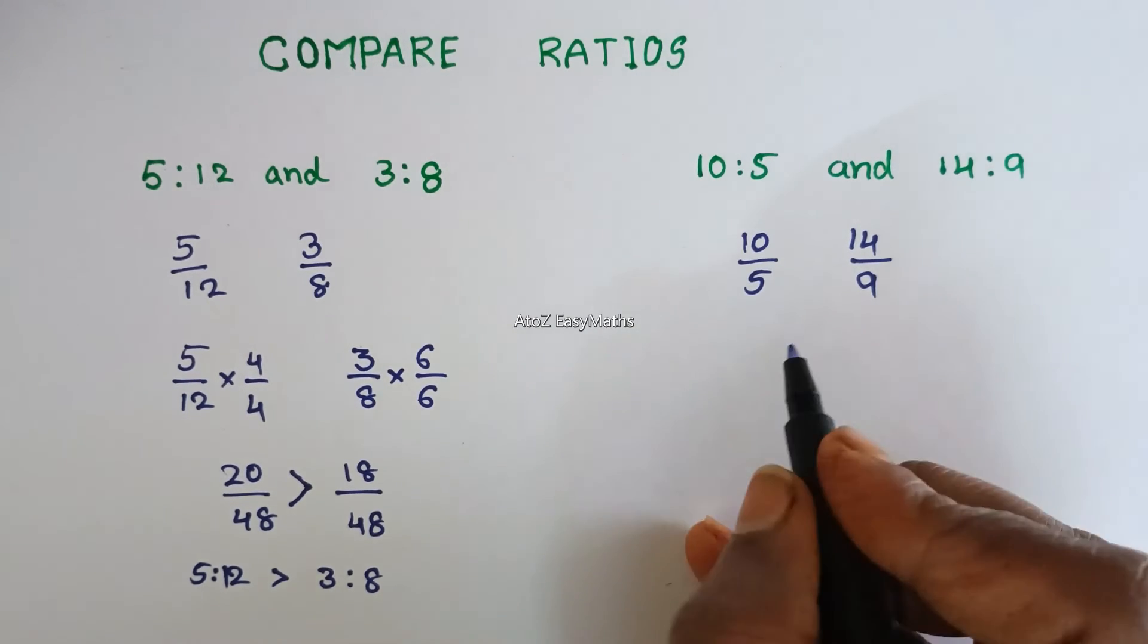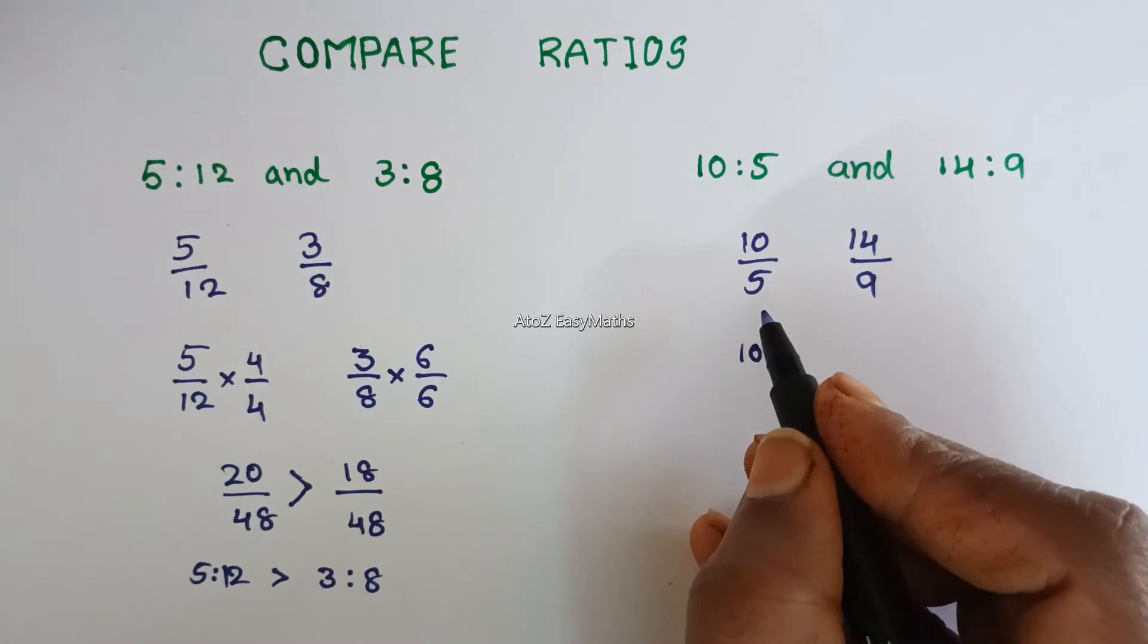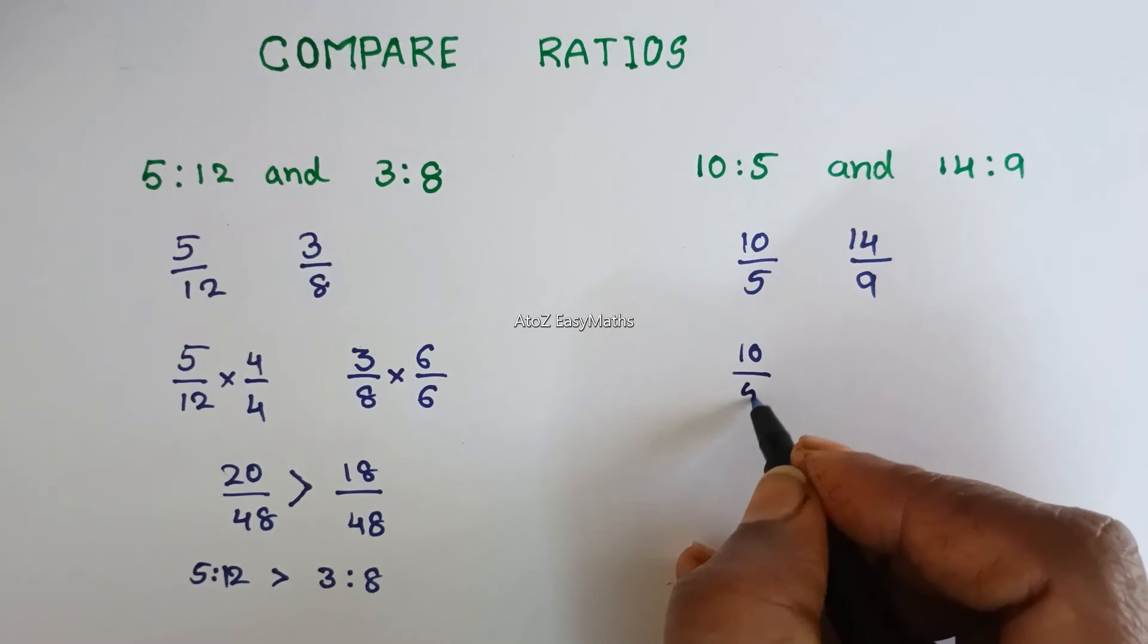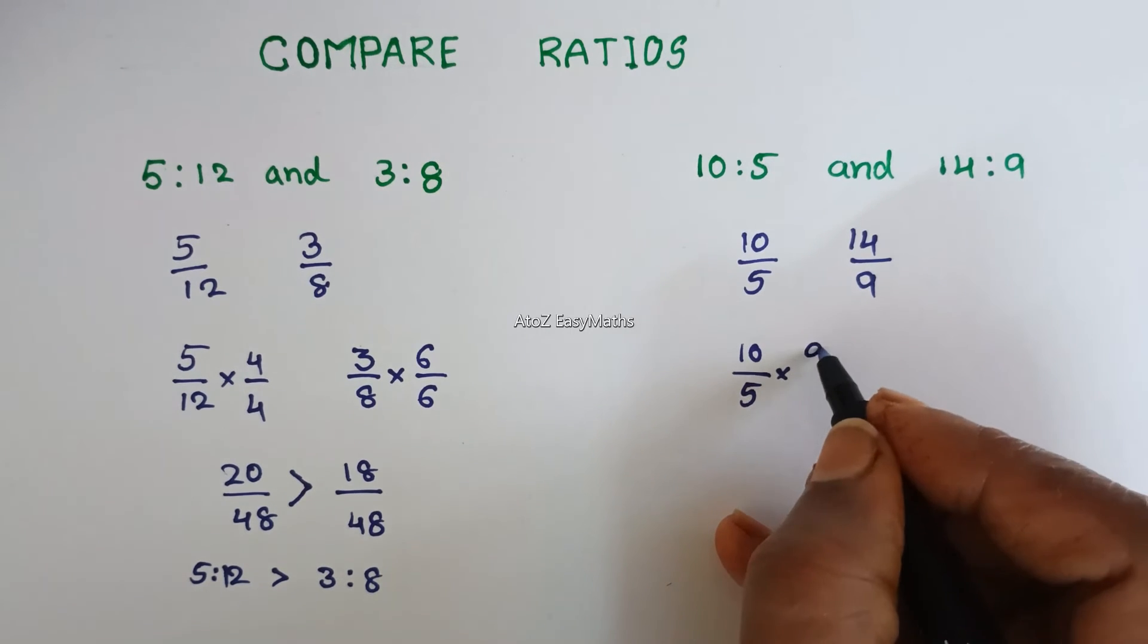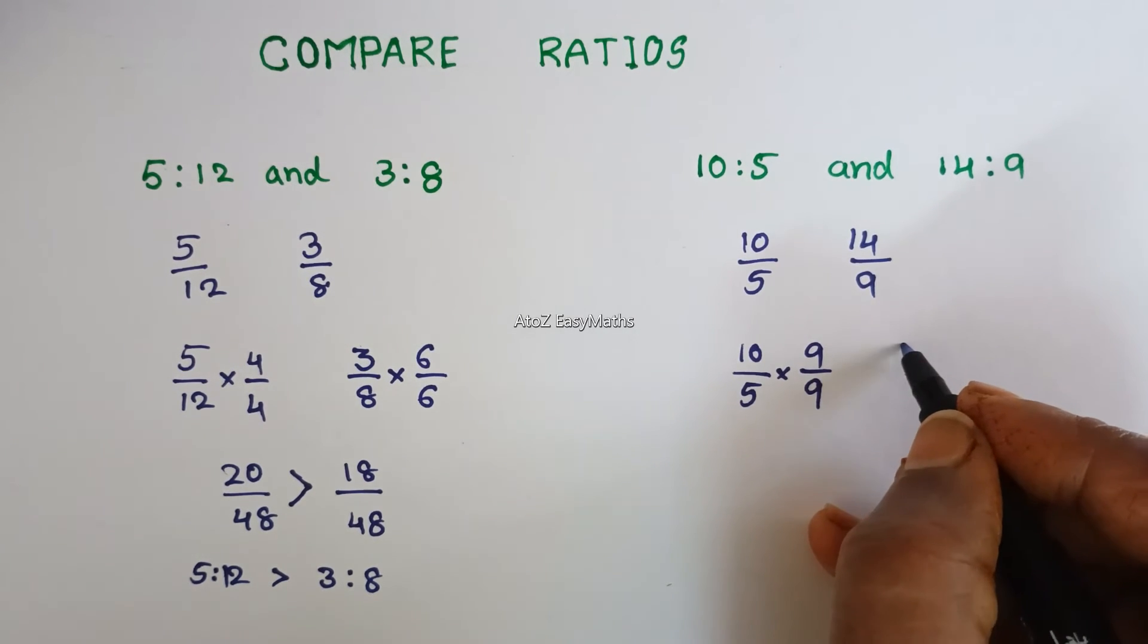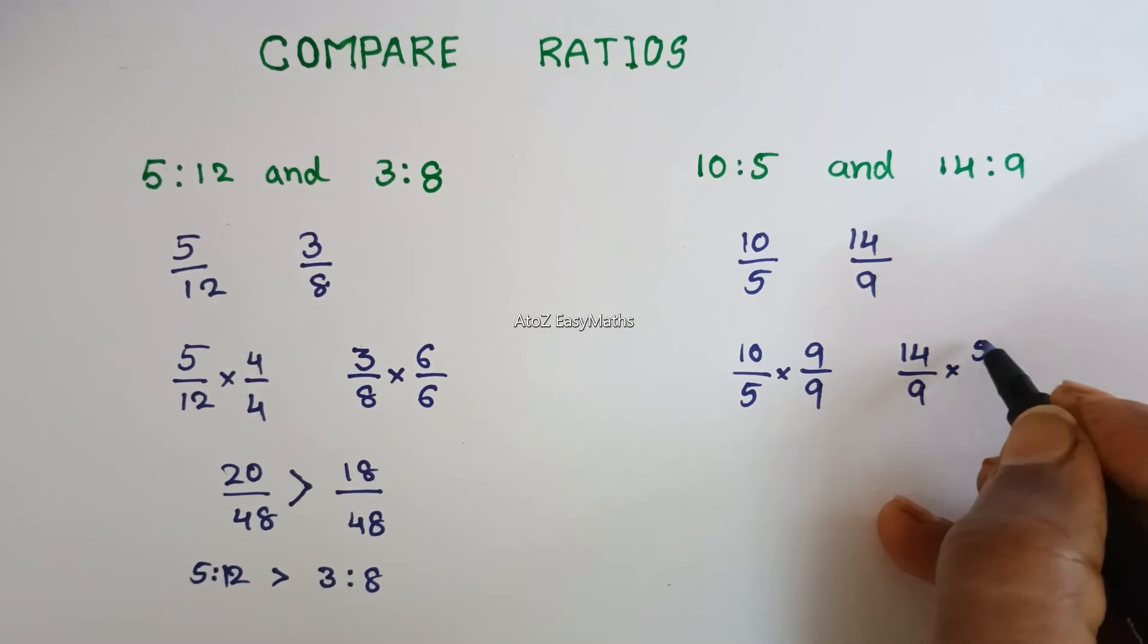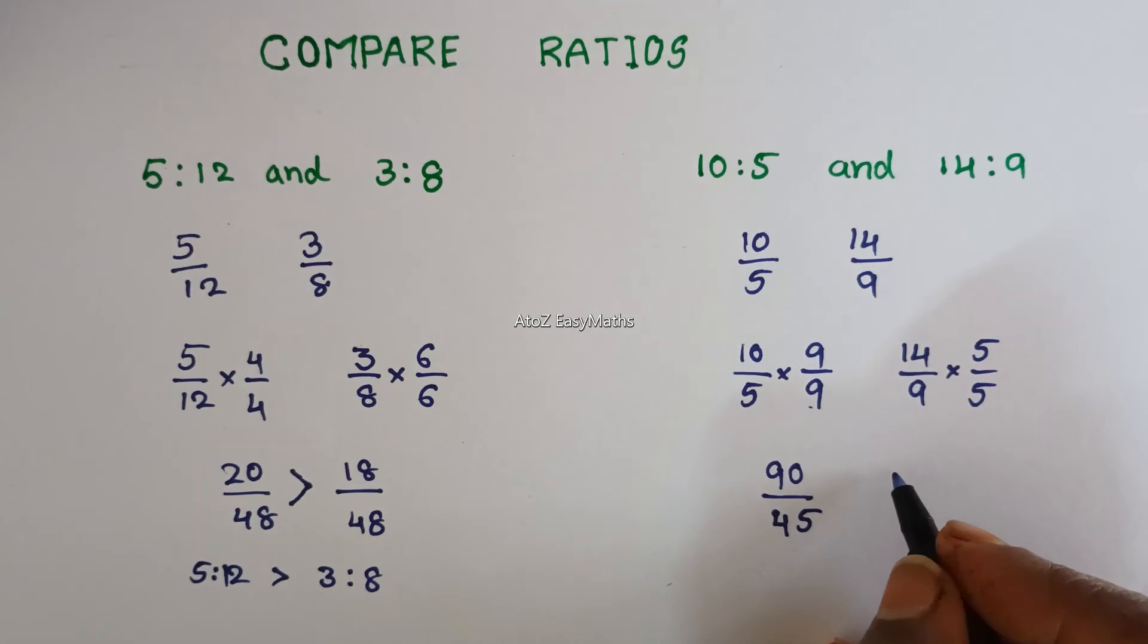For that, we can multiply by 9 here and by 5 here. 5 times 9 is 45 and 9 times 5 is also 45. For that, 10 over 5 we are multiplying by 9 over 9. 14 over 9 multiplying by 5 over 5. 10 times 9 is 90, 5 times 9 is 45.